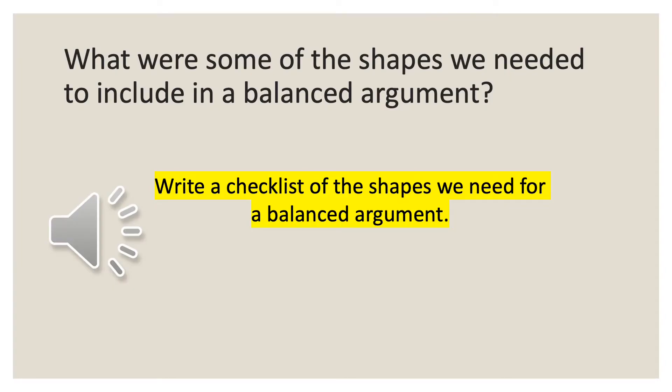Think back to yesterday. Can you remember that key that we looked at? It was all of these shapes we need to include. Every different text will have a different shape to it, and these little symbols showed us things we must include to build the shape of a balanced argument. Can you write a checklist of the shapes we need for a balanced argument? Give yourself a minute, write down as many as you can remember, and then on the next slide we'll go through and see how many you've got.